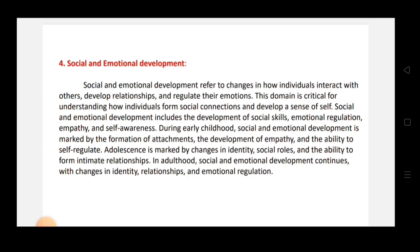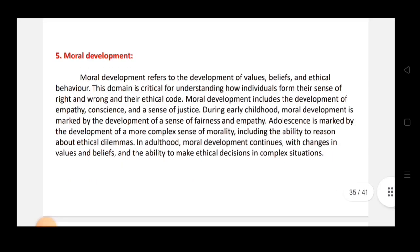In adolescence, social and emotional development is marked by changes in identity, social roles, and the ability to form intimate relationships. Adolescents act according to the roles given by society and begin forming intimate relationships. In adulthood, social and emotional development continues with changes in identity, relationships, and emotional regulation.